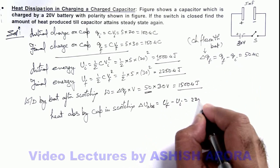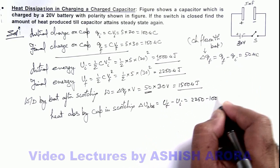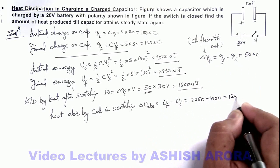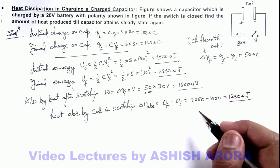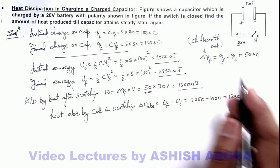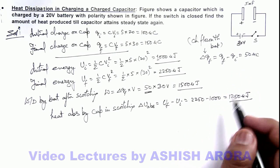is 1000 microjoule. So this is 1250 microjoule. This is the amount of energy which is absorbed by the capacitor.